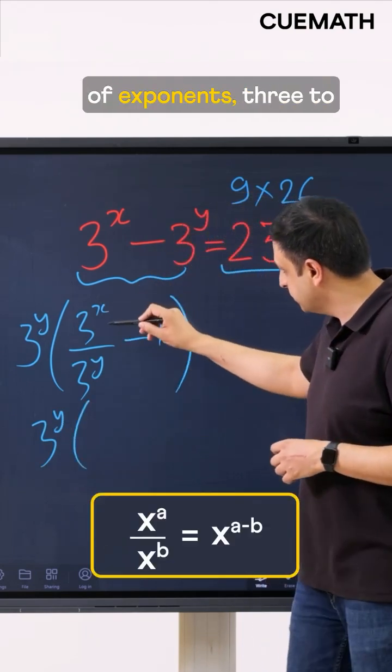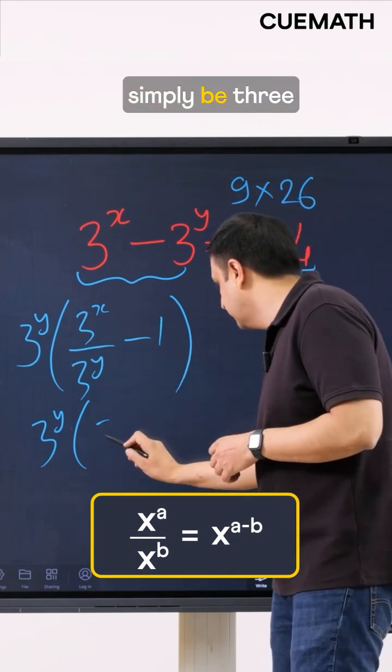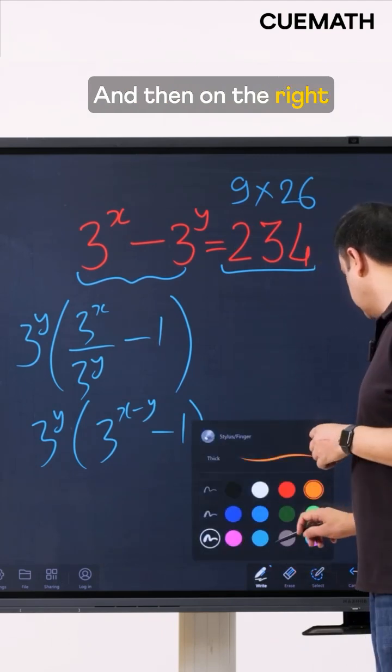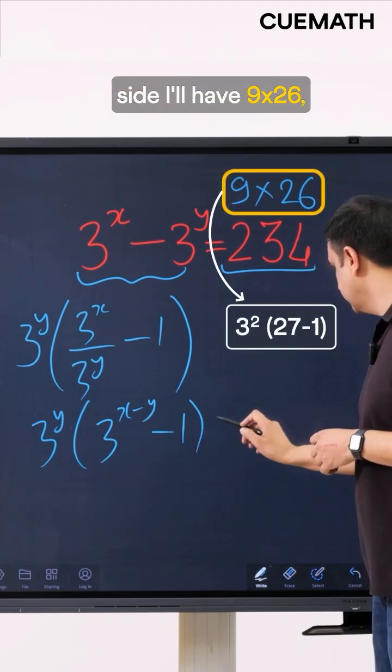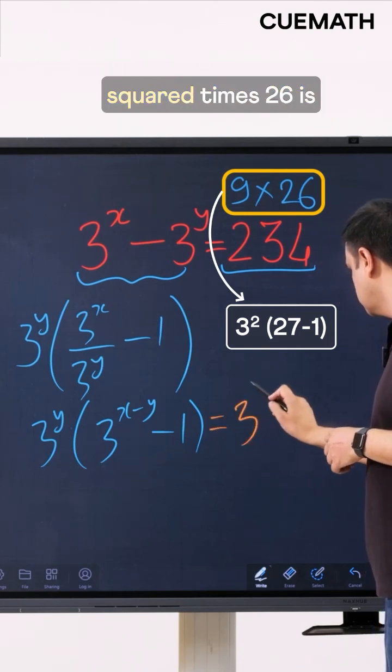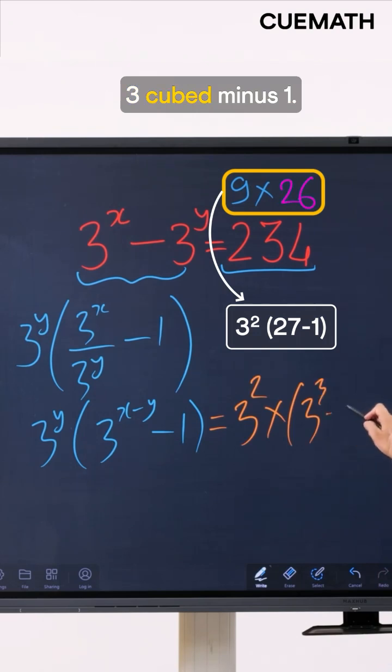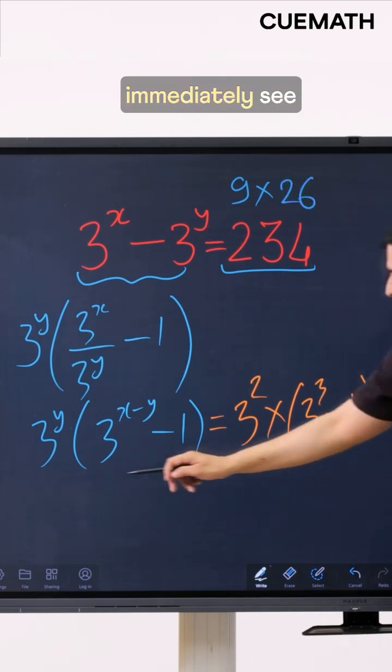Now using the laws of exponents, 3 to the x over 3 to the y will simply be 3 to the x minus y and then I have minus 1. On the right side I'll have 9 times 26 which I can write as 3 squared times 26 is 3 cubed minus 1 and now you can immediately see the similarity on the two sides.